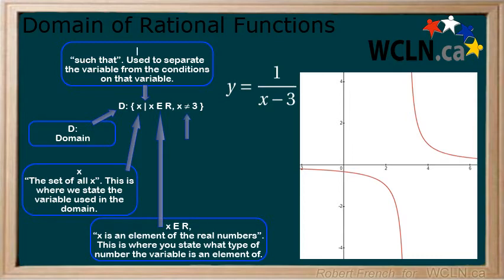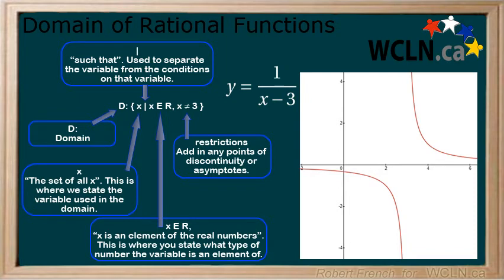Finally, we write any restrictions on x. Here is where we add any points of discontinuity or asymptotes. In this example, we have an asymptote at x equals 3. Therefore, we'll write that x cannot equal 3. There is no limit to how many restrictions can be added here, and all that apply should be added.